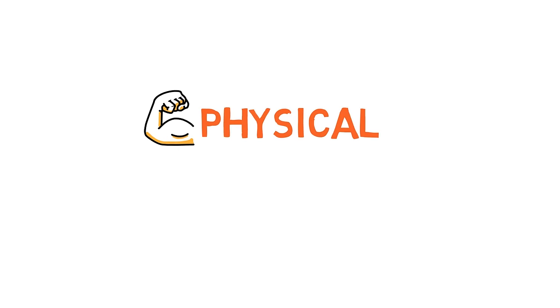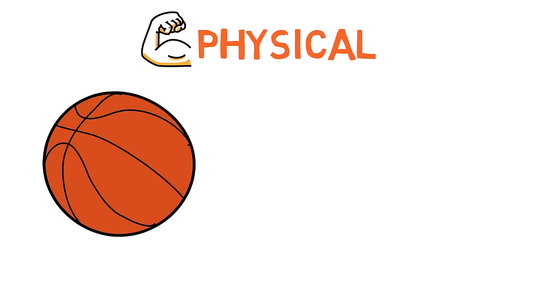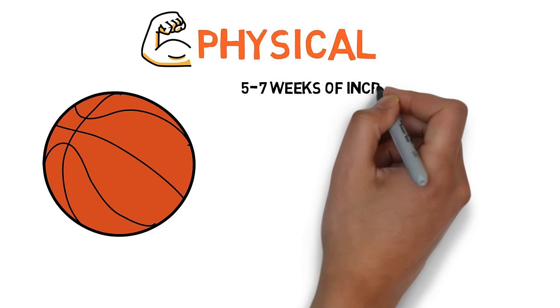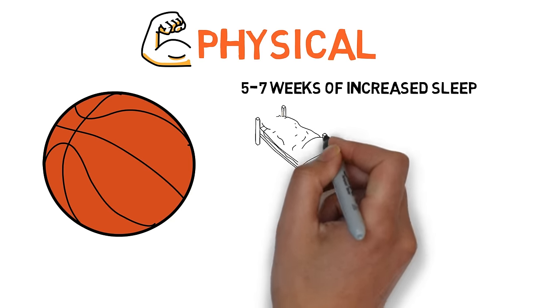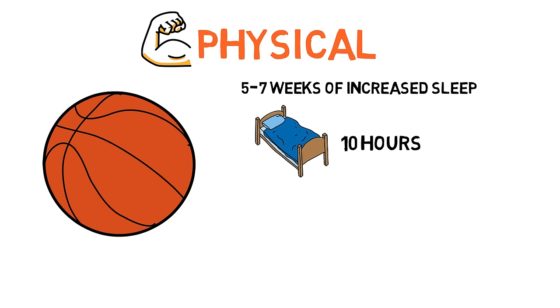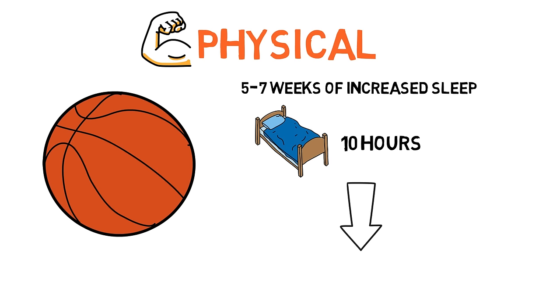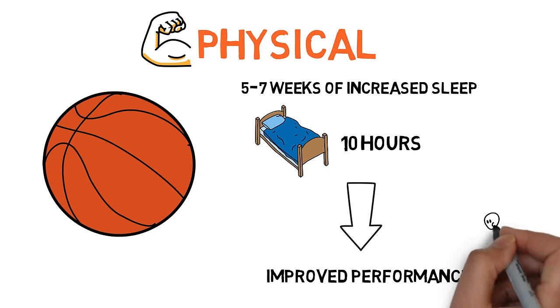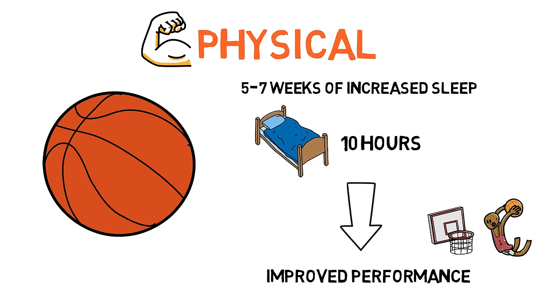Third, physical function. In a fascinating study conducted at Stanford, researchers subjected college basketball players to a 5-7 week period of increased sleep. Participants obtained as much sleep each night as possible, attempting to spend 10 hours in bed. And the scientists then measured their physical performance. After this sleep extension period, subjects had faster sprints, improved shooting accuracy, and scored better on assessments of physical and mental well-being.